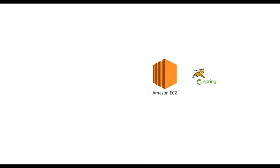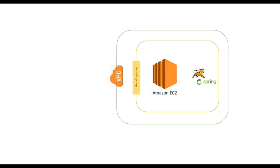I have a Spring Boot application which I would like to deploy in an Amazon EC2 instance. Whenever you launch a new EC2 instance it's always going to be attached with a security group, and the EC2 instance itself is going to be inside a VPC — a Virtual Private Cloud. AWS by default creates a default VPC for you. Any user who wants to use your application will send a request and it will go through the VPC first, then to the security group, and then finally reach your EC2 instance, where your Spring Boot application is deployed.